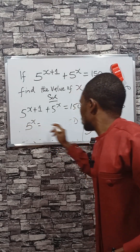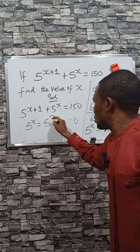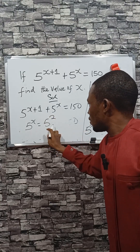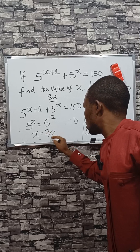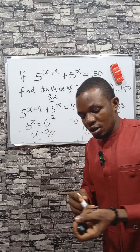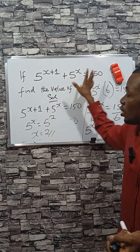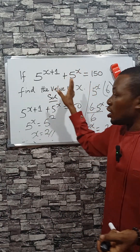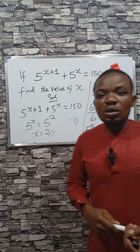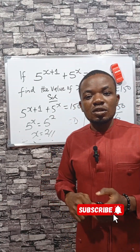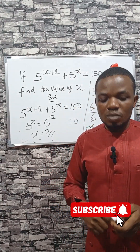5 raised to the power of x equals 25, and 25 is 5 squared, so they have the same base and you can compare the powers. The answer is x equals 2. Very simple — instead of applying logarithm, which takes longer. If you like what I'm doing here, like, share, subscribe and turn on the bell for more. Bye!